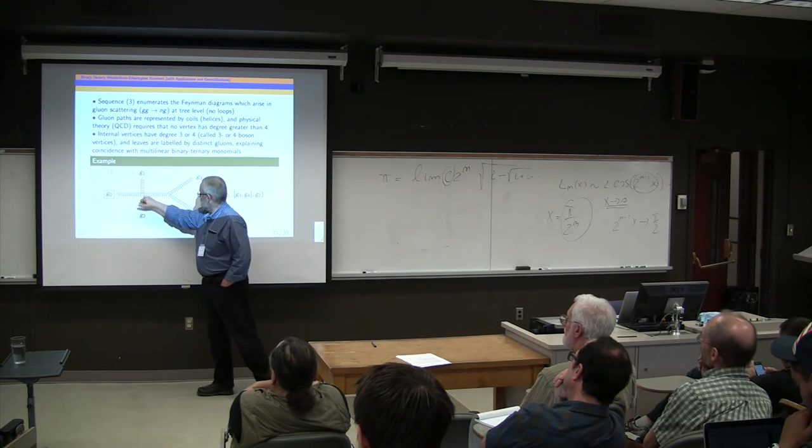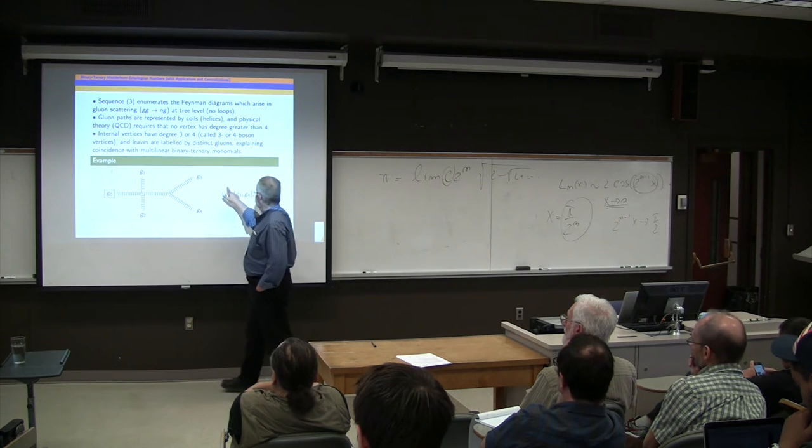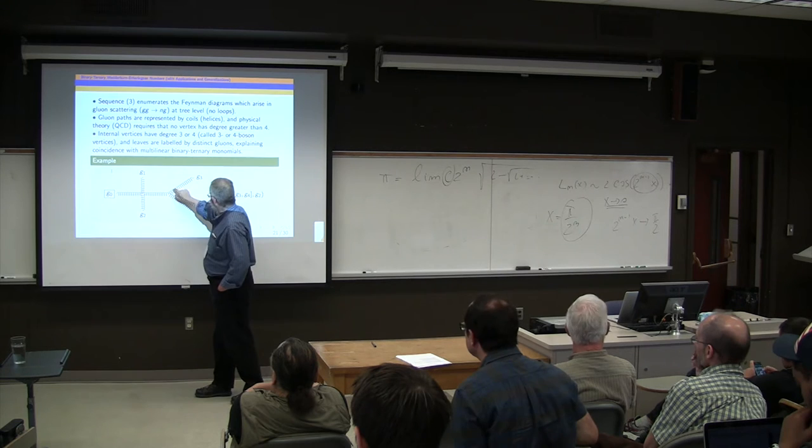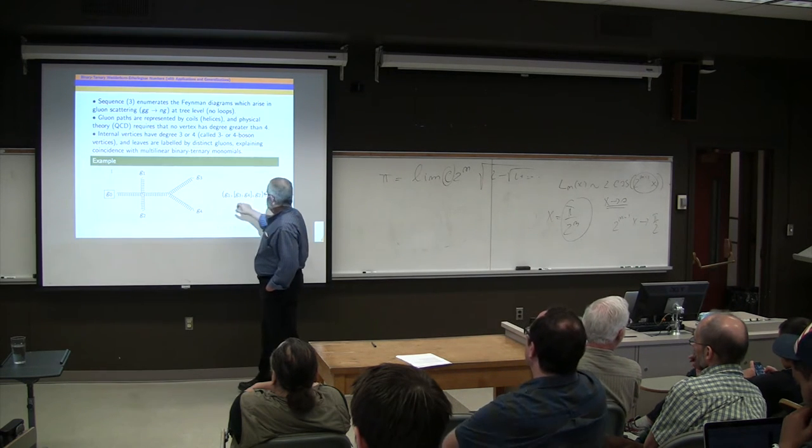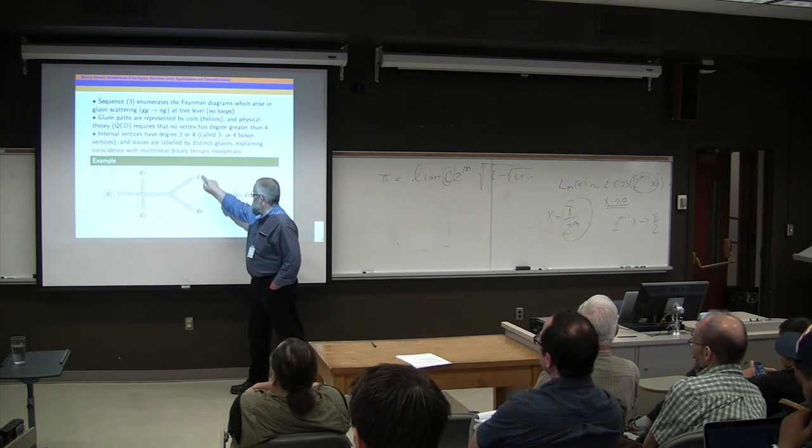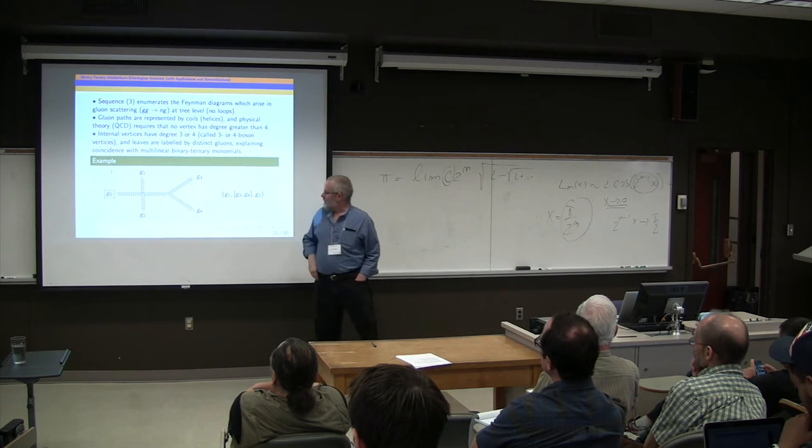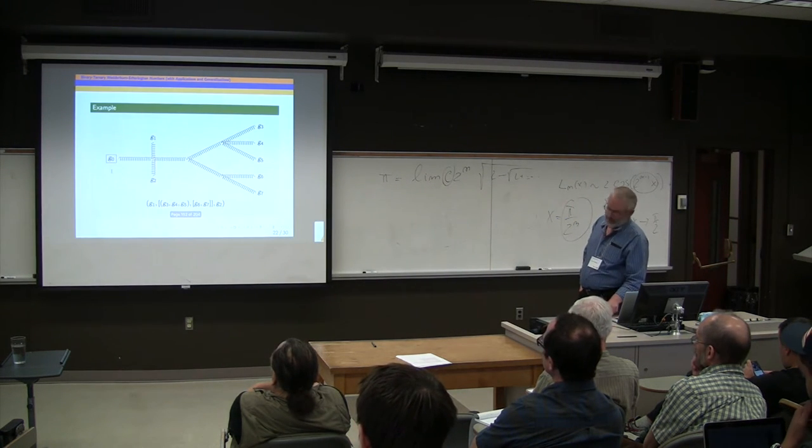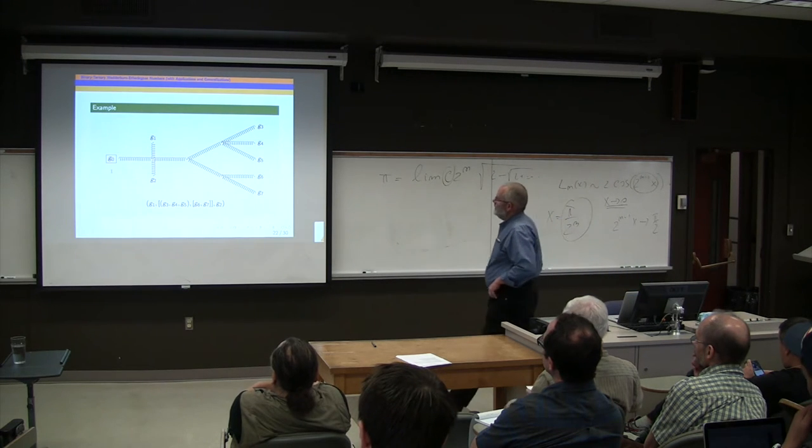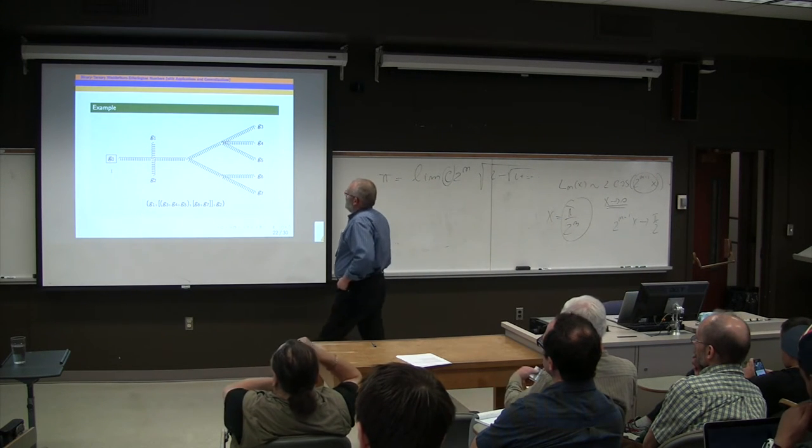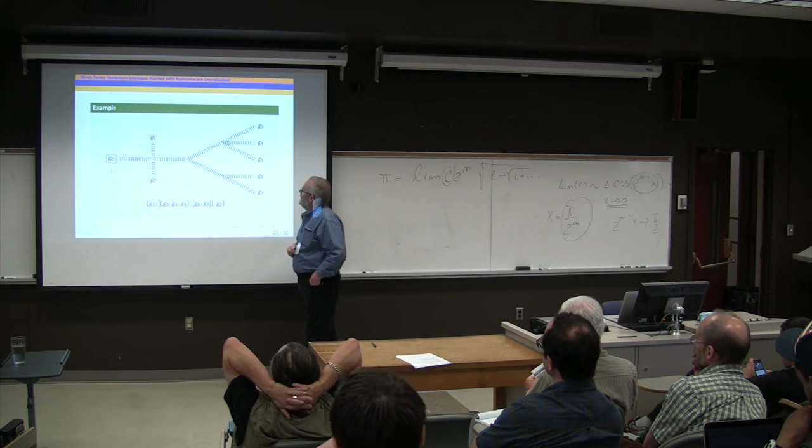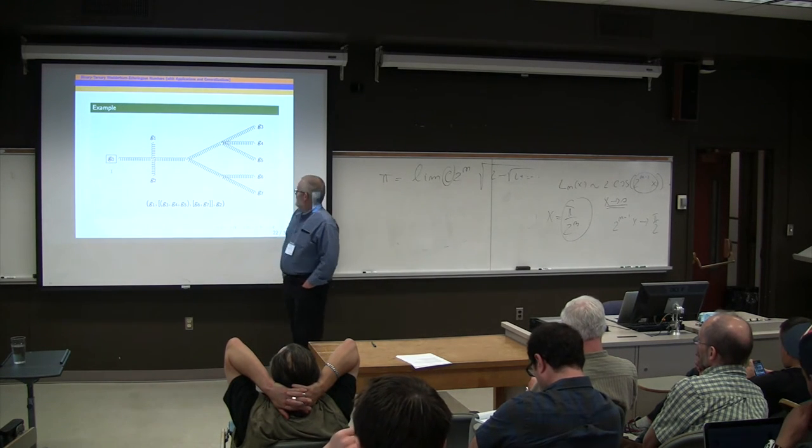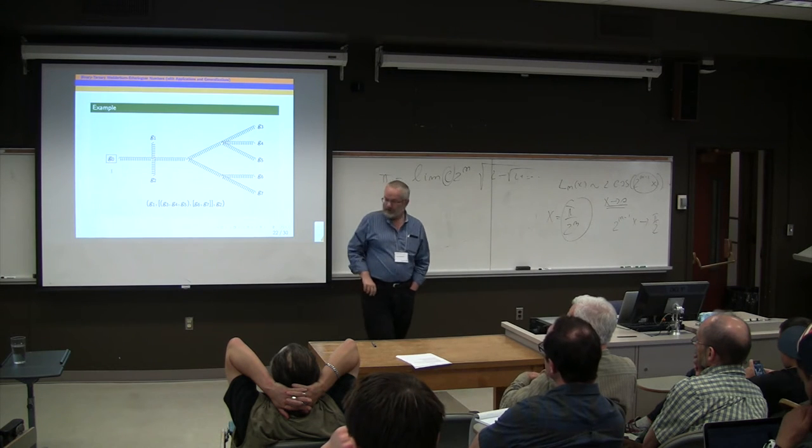So this Feynman diagram corresponds to this non-associative monomial. I've got a vertex of degree four here, so it represents a ternary operation, and its arguments are g1, and then this value, and then g2, and this value is g3, binary operation, with g4. And there's a more slightly more complicated example of an allowed Feynman diagram which would correspond to this non-associative multilinear monomial.